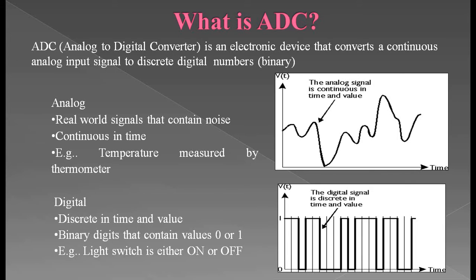The next type is the digital signal. A digital signal is discrete in time and value. It can be a binary digit containing only the value 0 or 1. The example given is a light switch — we use a light switch in our houses, and it has only two positions: either switched on or switched off. On means it will give 1 as a binary digit, and off means 0 as a binary digit. You can see in this graph that the value is either 0 or 1, shown as a square wave with respect to time. The function on the y-axis has only two values: either on or off.